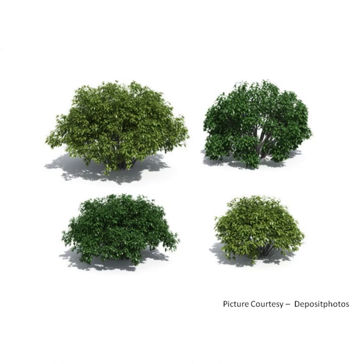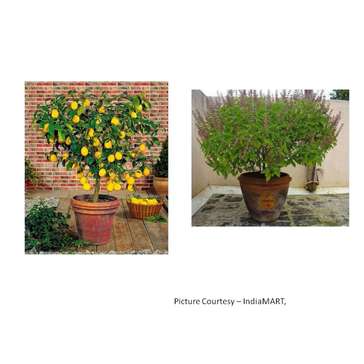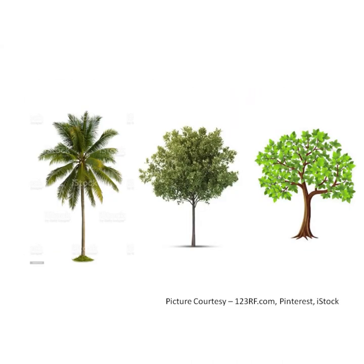Shrubs are medium-sized woody plants. They are taller than herbs but shorter than a tree. They are bushy and have hard and woody stems with many branches. Their stems are hard but flexible. Their life span depends upon the type of plant. Rose, jasmine, lemon, tulsi, and henna are some common shrubs around us.